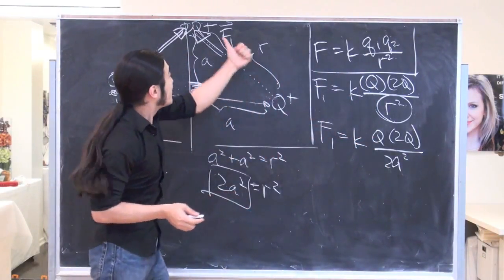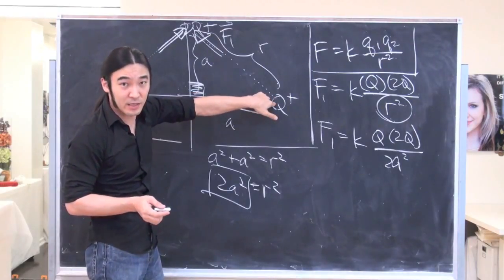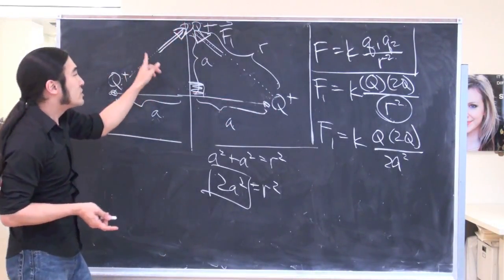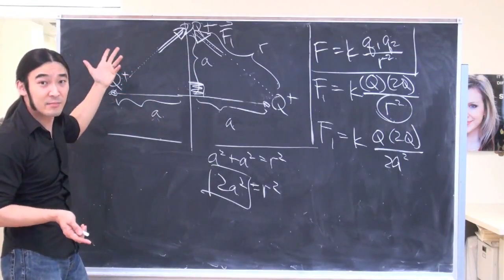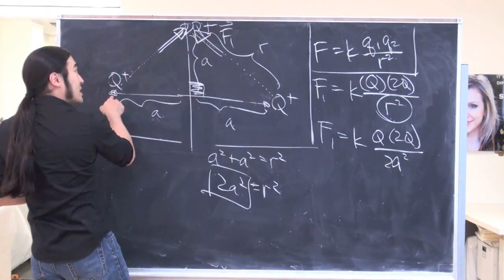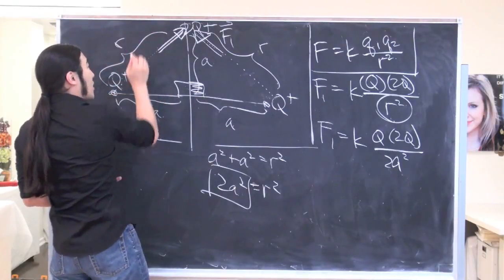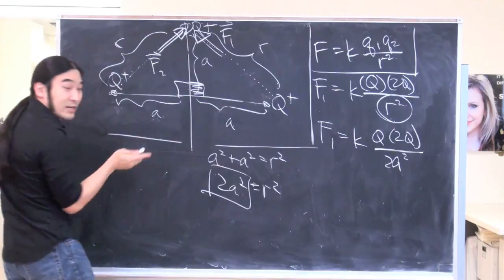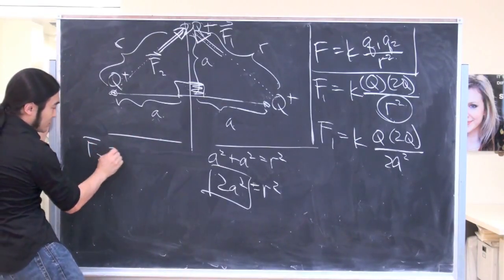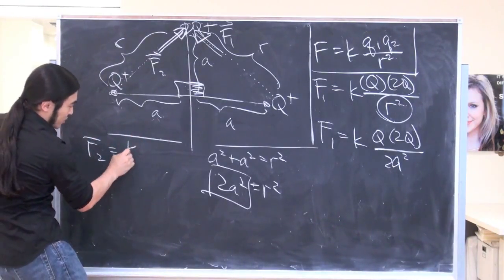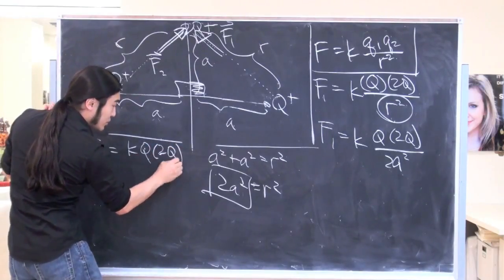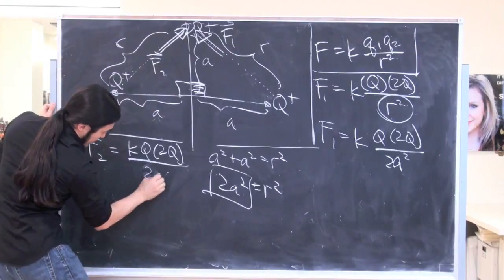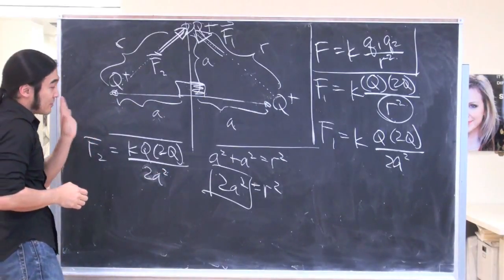But remember, this is the push this way from this guy. Now we have to combine that with this guy's push this way, and when you crunch the numbers you'll get exactly the same numbers. I mean, this is A and this is A, this is the right angle, so you'll get this push. Let's call him F2. F2's push is basically the same thing: KQ(2Q) / 2A².